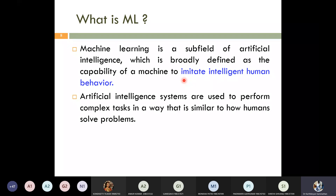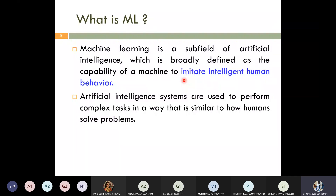Machine learning — by giving knowledge to the machine, the machine starts learning something. That learning we call machine learning. Either by training or teaching a model to the machine, the machine will start learning something. It is similar to how a human learns — that is what machine learning is all about.